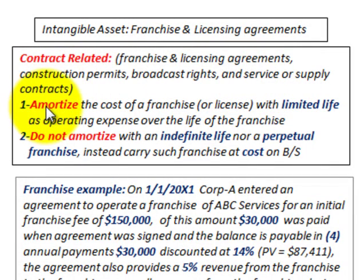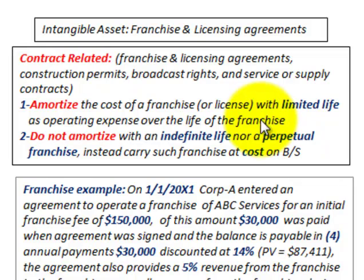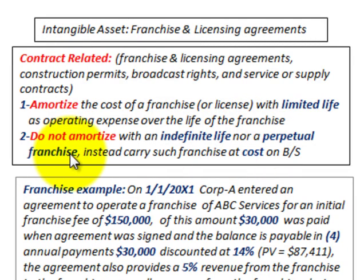We have to account for these intangible assets. We'd amortize the cost of the franchise or the license with a limited life as an operating expense over the life of the franchise. We do not amortize if it has an indefinite life — nor a perpetual franchise.